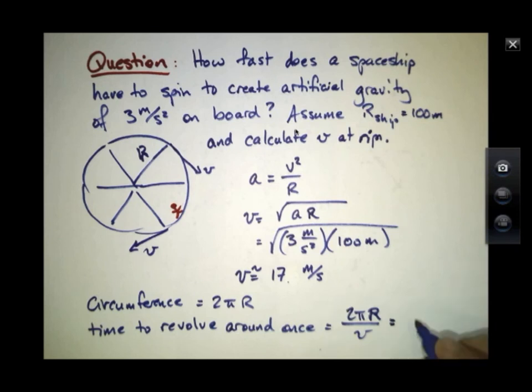This says that the entire spaceship will move around one full circumference, or once back on itself, every 35 seconds or so.